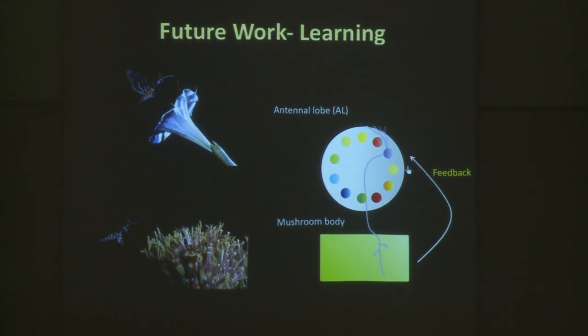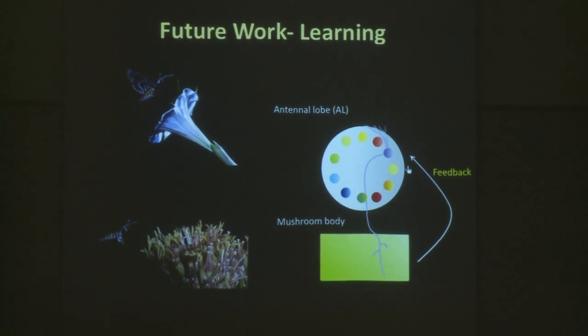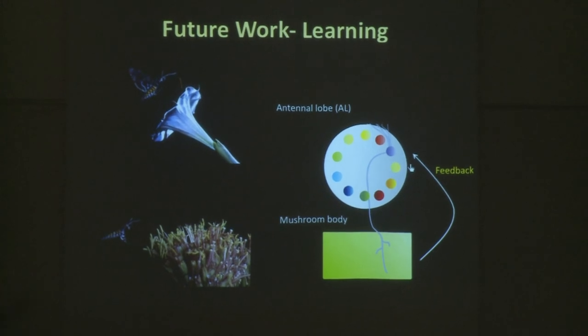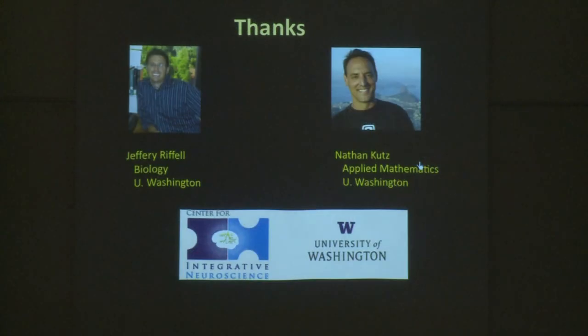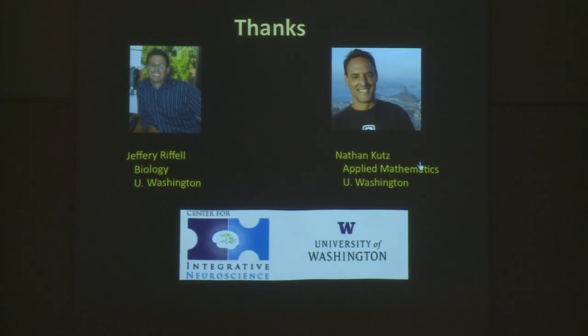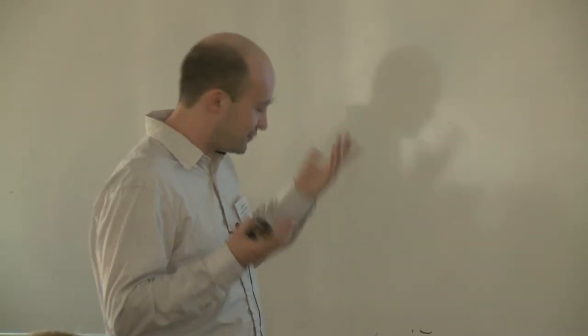Indeed, these experiments were done, and what was observed is that the patterns do change in the firing rate — you can see different patterns in terms of firing rates. Indeed, the moth can be trained to feed from almost any new flower. I would like to finish by thanking my collaborators: Jeff Riffel from Biology, Nathan Kutz from Applied Mathematics, and the Center for Integrative Neuroscience at the University of Washington, which combines researchers from different places to work on interesting problems. Thank you for your attention.